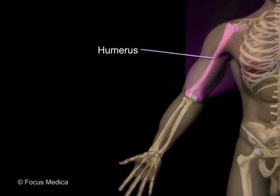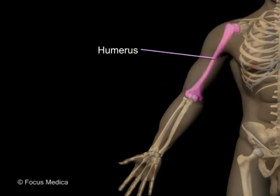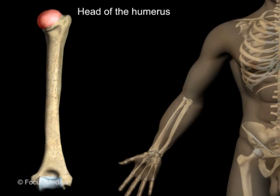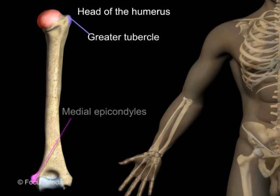The humerus is the long bone of the arm. Prominent landmarks include the head of the humerus, greater tubercle, and medial and lateral epicondyles.